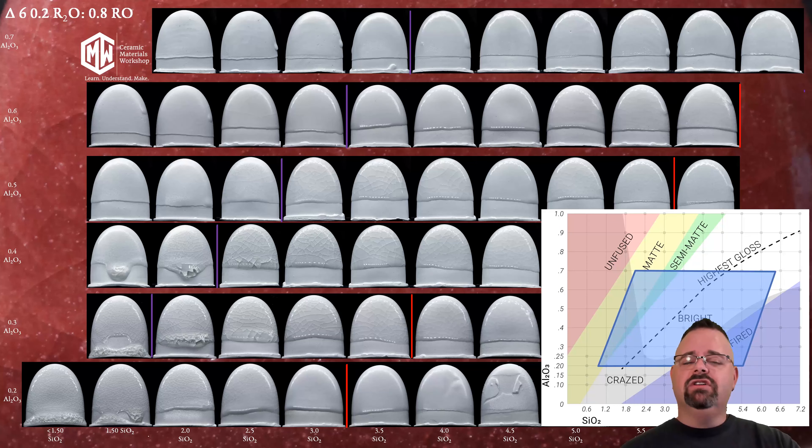This is a recreation of Stull's map with real glazes made with the same materials that we all use. Nepheline syenite and calcium carbonate, kaolin, silica, frit 3134 because this map was made at cone 6. Because using the tools that we'll talk about down the road in this workshop we're going to learn how we bring that temperature down to cone 6.